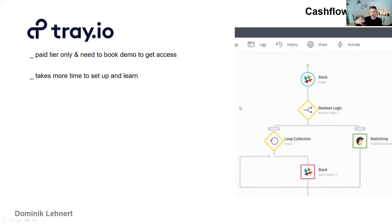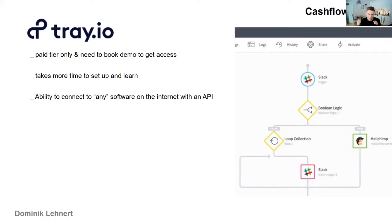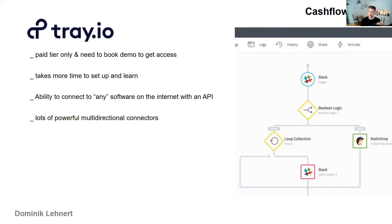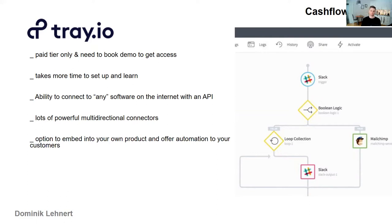One nice thing about Tray.io is you can connect to basically any software on the internet that has an API. They've put in the work to build really powerful connectors. For example with the Stripe connector, there are many actions you can perform and many multi-directional connectors available. Another unique feature the other tools don't offer is you can embed Tray.io into your own software.